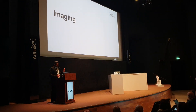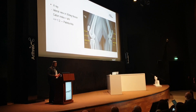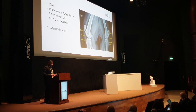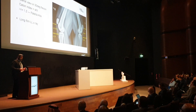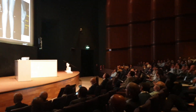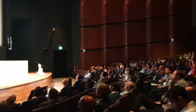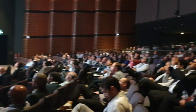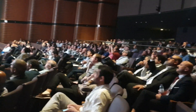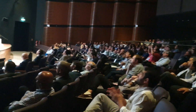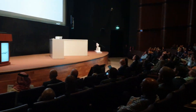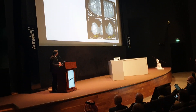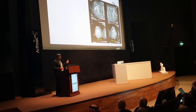Then, after that, imaging: lateral X-ray is very helpful to diagnose the TT-TG, to diagnose the trochlea alpha angle, and also the long-leg view to see the coronal alignment. MRI is also helpful. CT scan to see the rotation profile and to calculate the TT-TG.